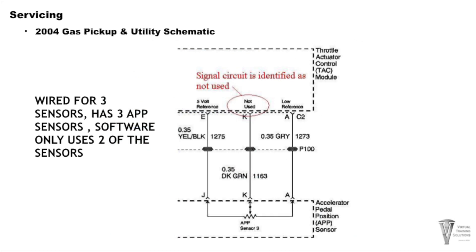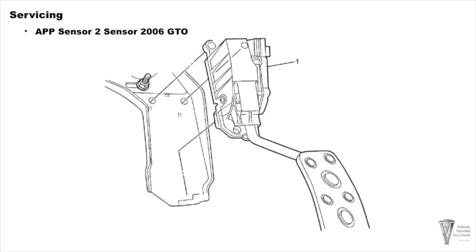For the most part, you're going to have three sensors inside that throttle pod on early model units, though later model ones don't. The software may only use two of those sensors — this was an interim change where you'd find three sensors but only two are physically functional. The Pontiac GTO was the first car to actually change from three sensors to two sensors.